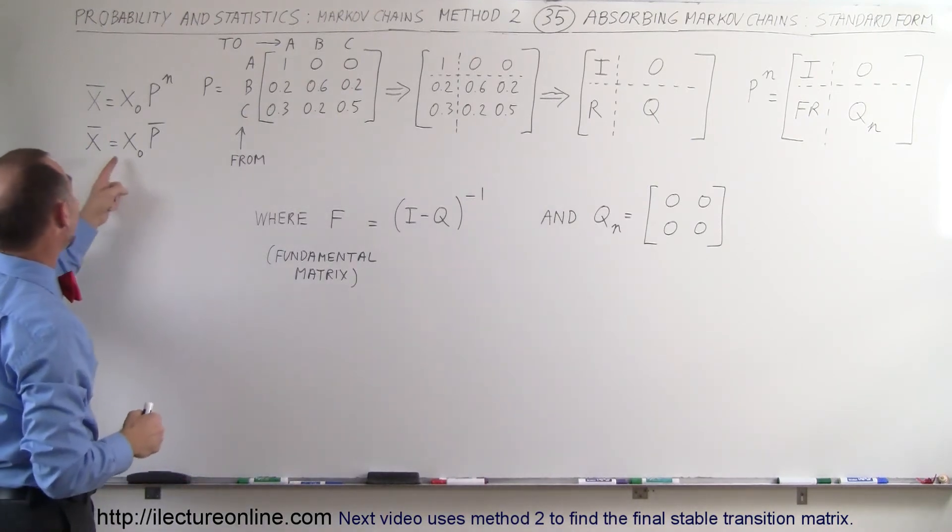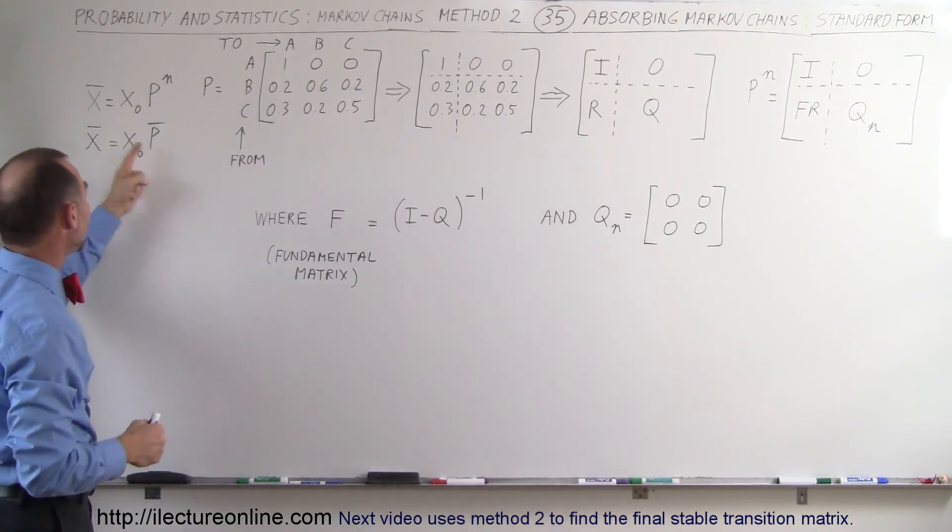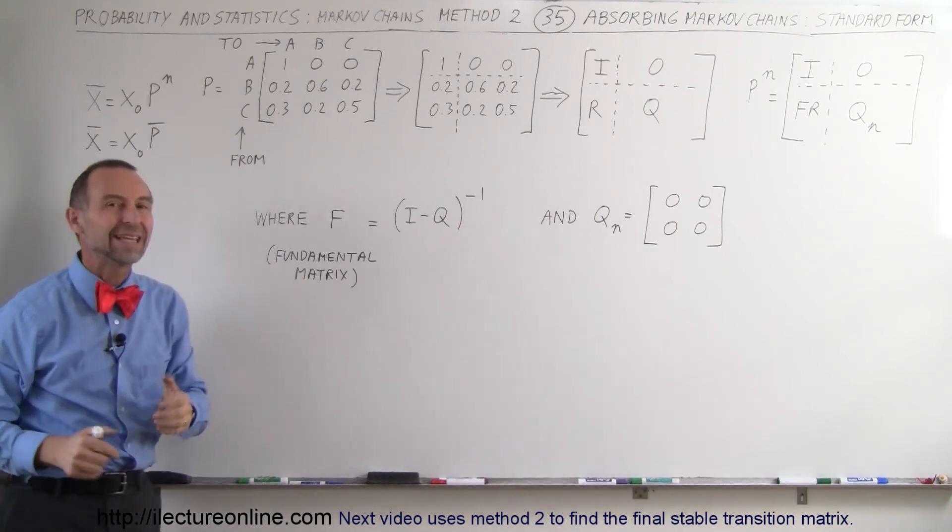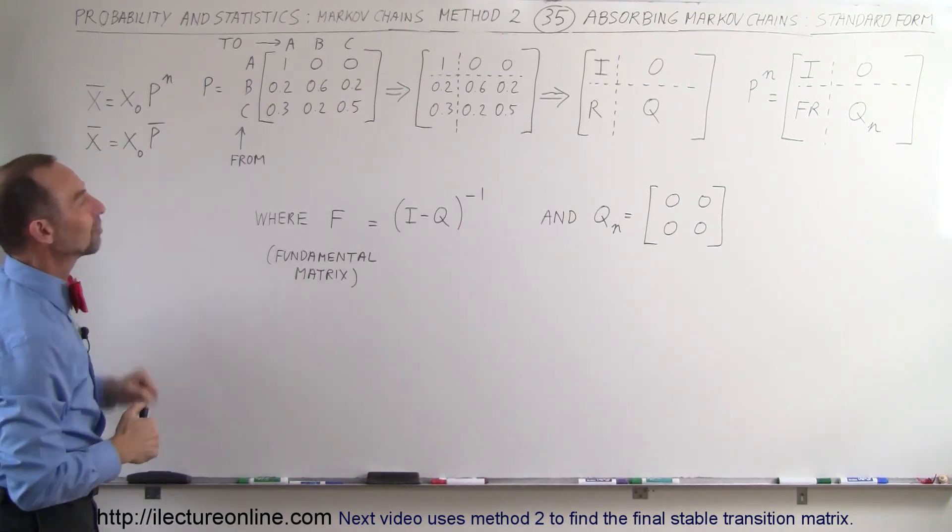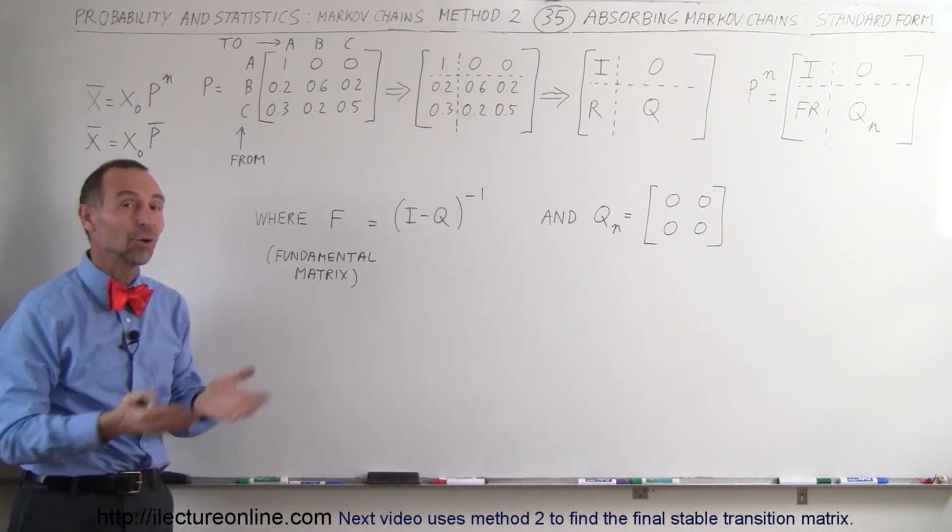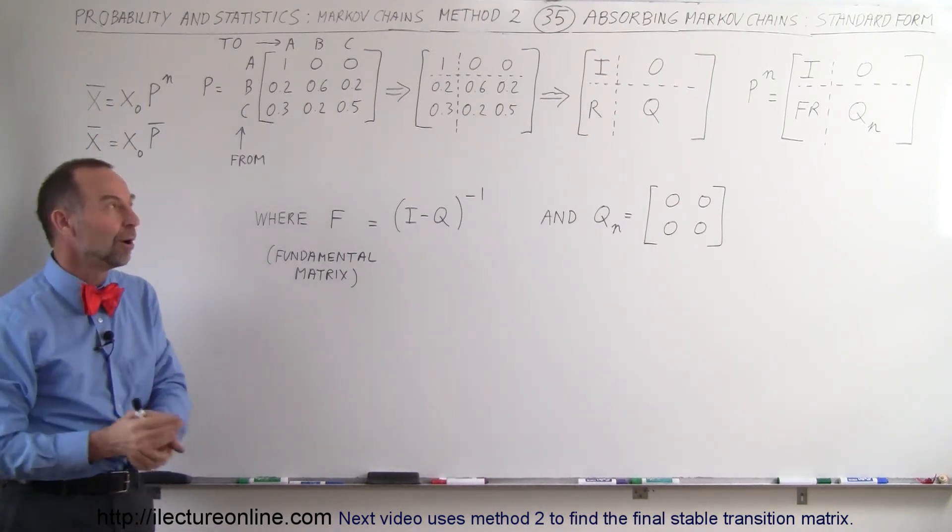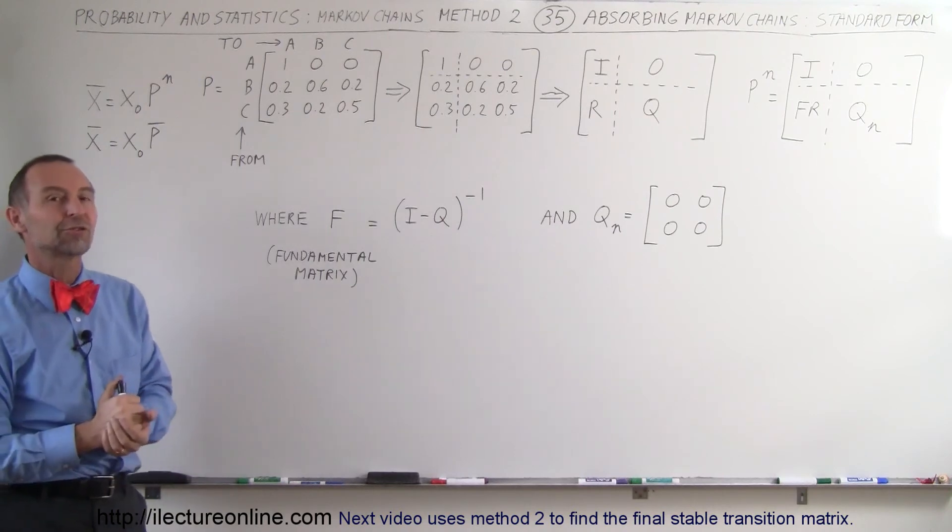When we multiply the initial state times the stable transition matrix, we end up with the final stable state matrix. That's what we mean by the standard form of the absorbing Markov chains.